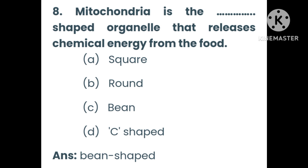Mitochondria is the blank-shaped organelle that releases chemical energy from food. Options are: square, round, bean-shaped, or C-shaped. The answer is bean-shaped.